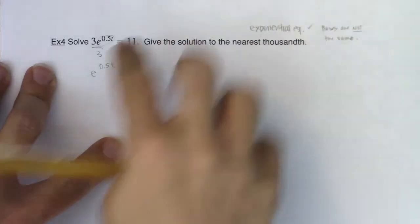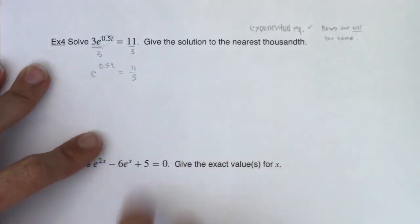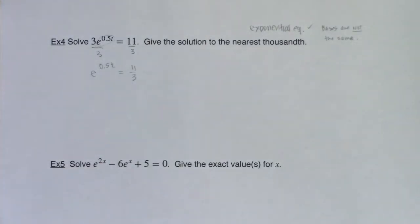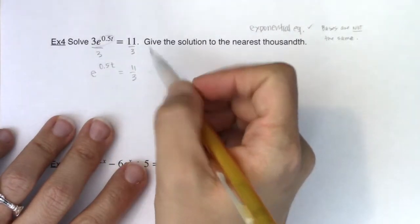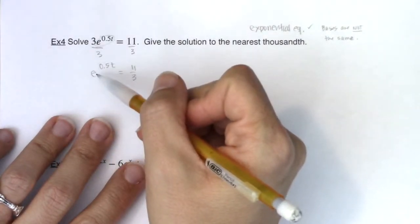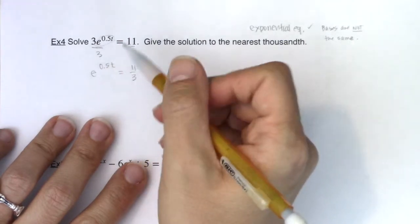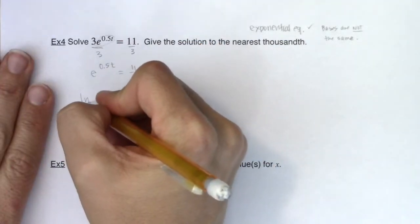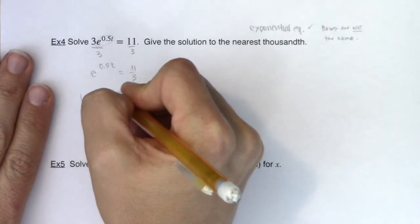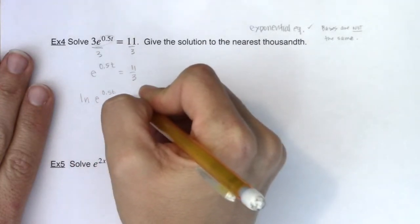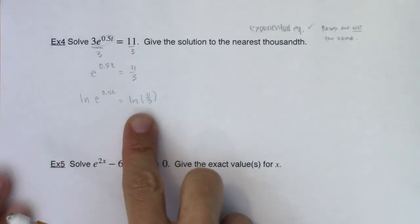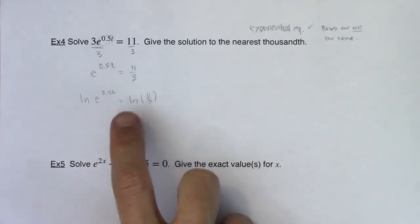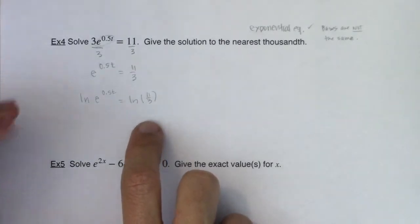And when that's the case, when you have an exponential equation and the bases are not the same, what you need to do is log both sides. Now you have the option of doing common log or natural log, but especially because this is base e, I'm going to take the natural log of both sides. So my next step is to do the natural log of e^0.5t, and that will equal the natural log of 11 thirds. Now if you want, you can write this right side as natural log of 11 minus natural log of 3, it's just not going to be worth it yet.